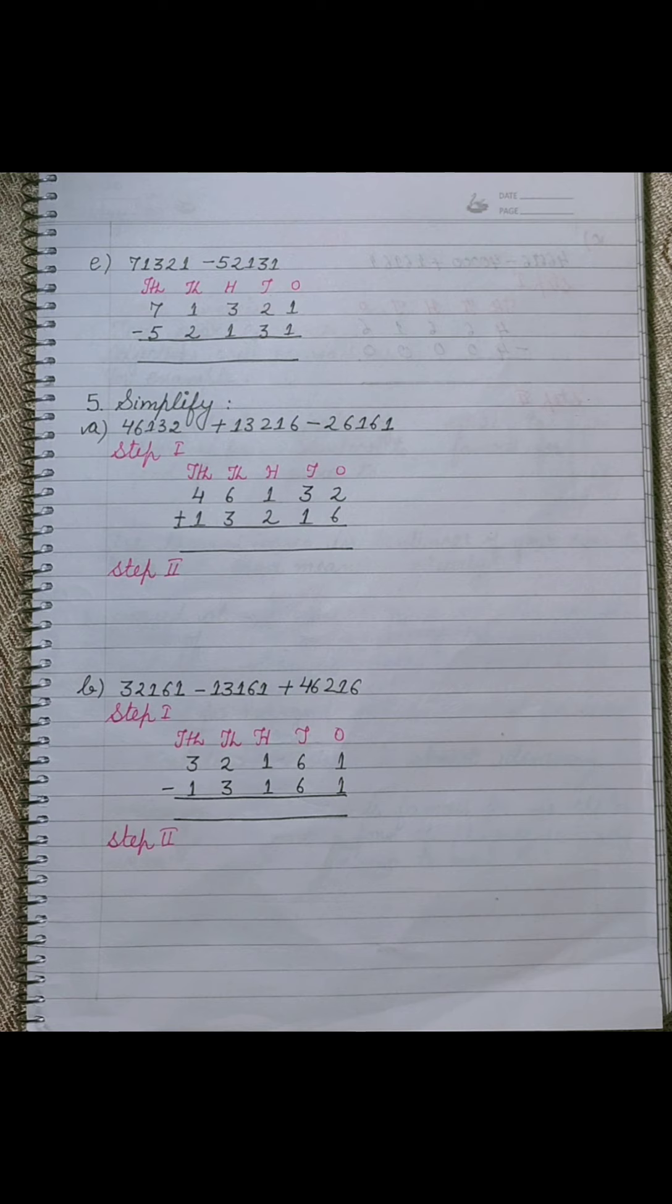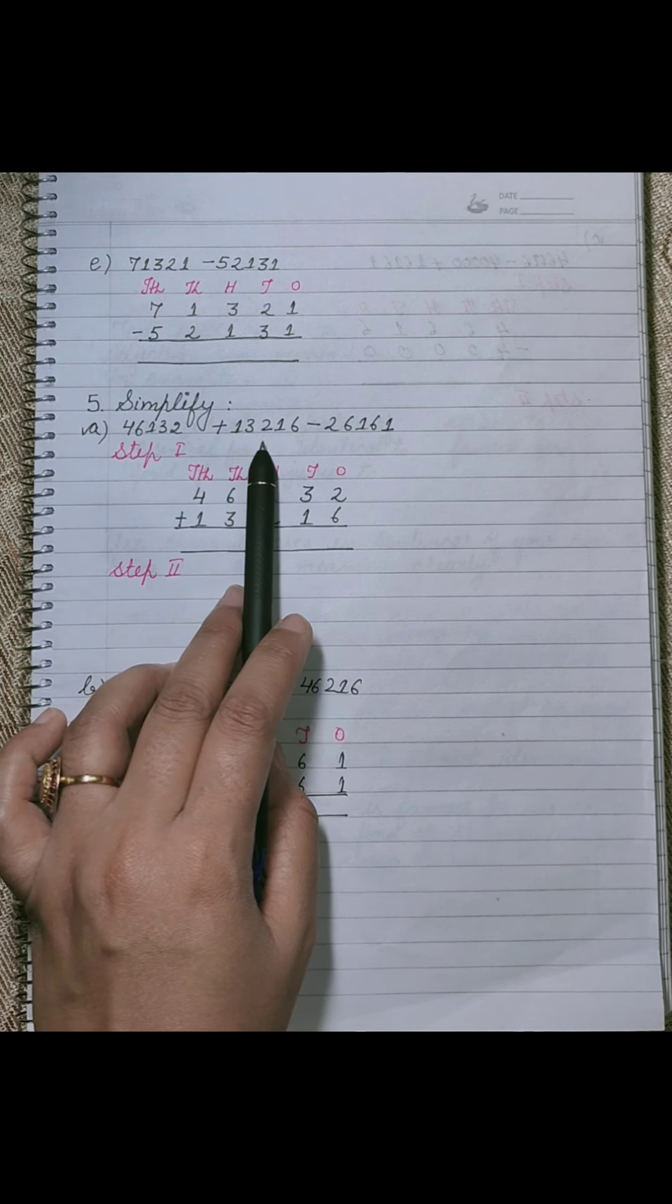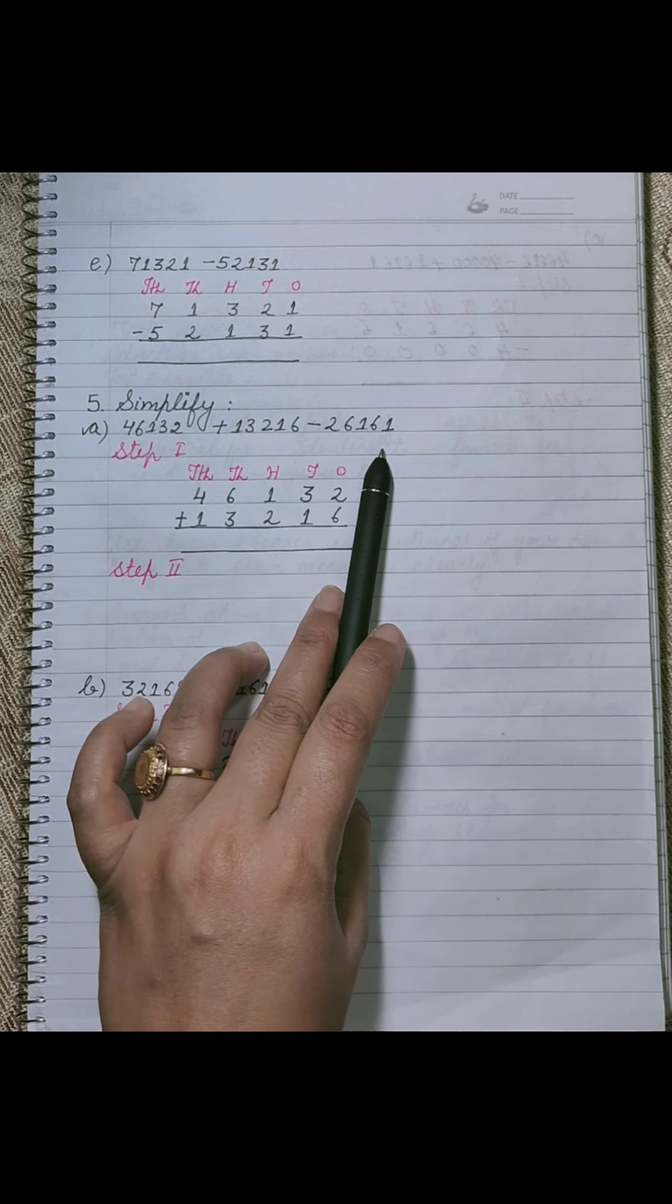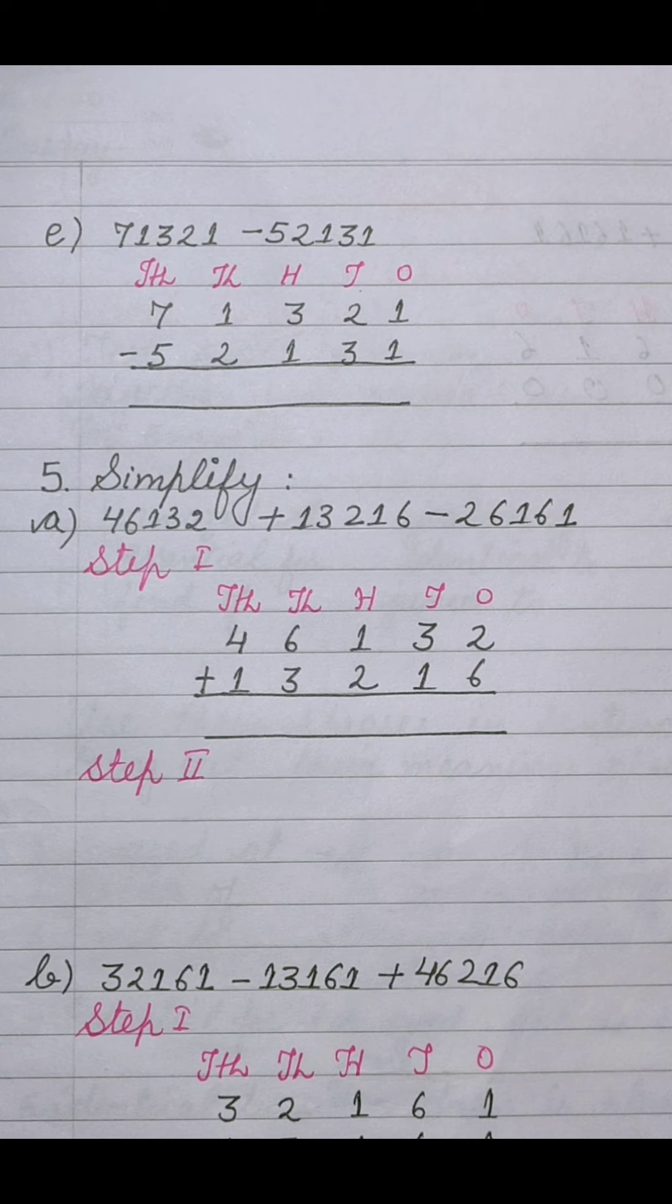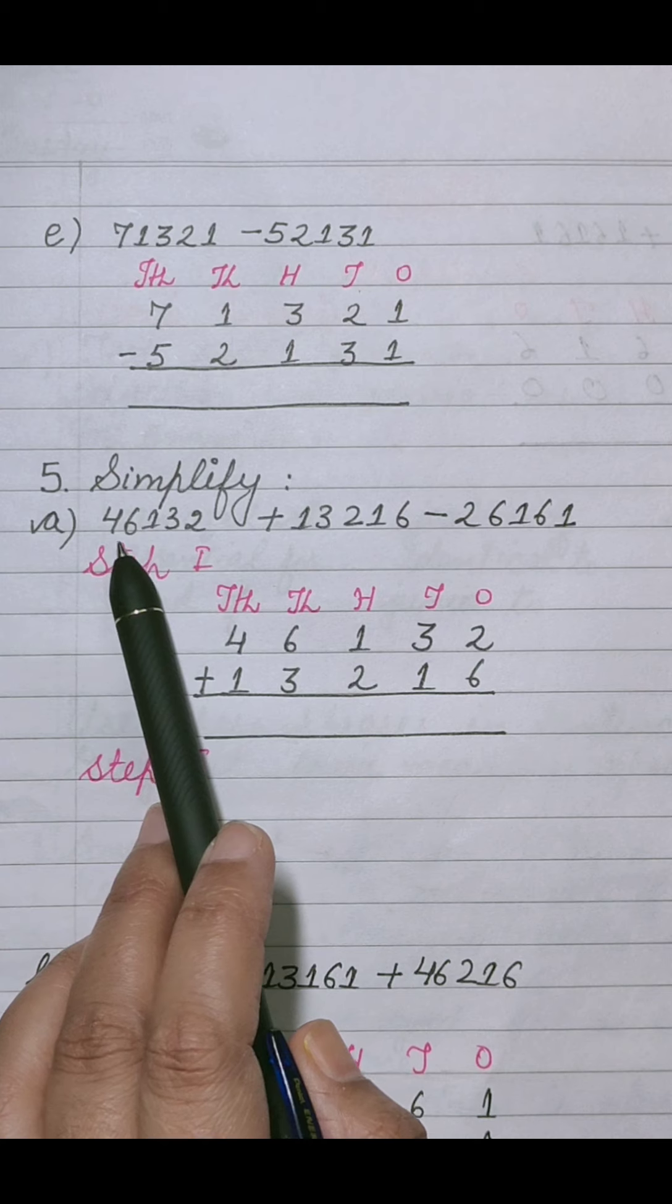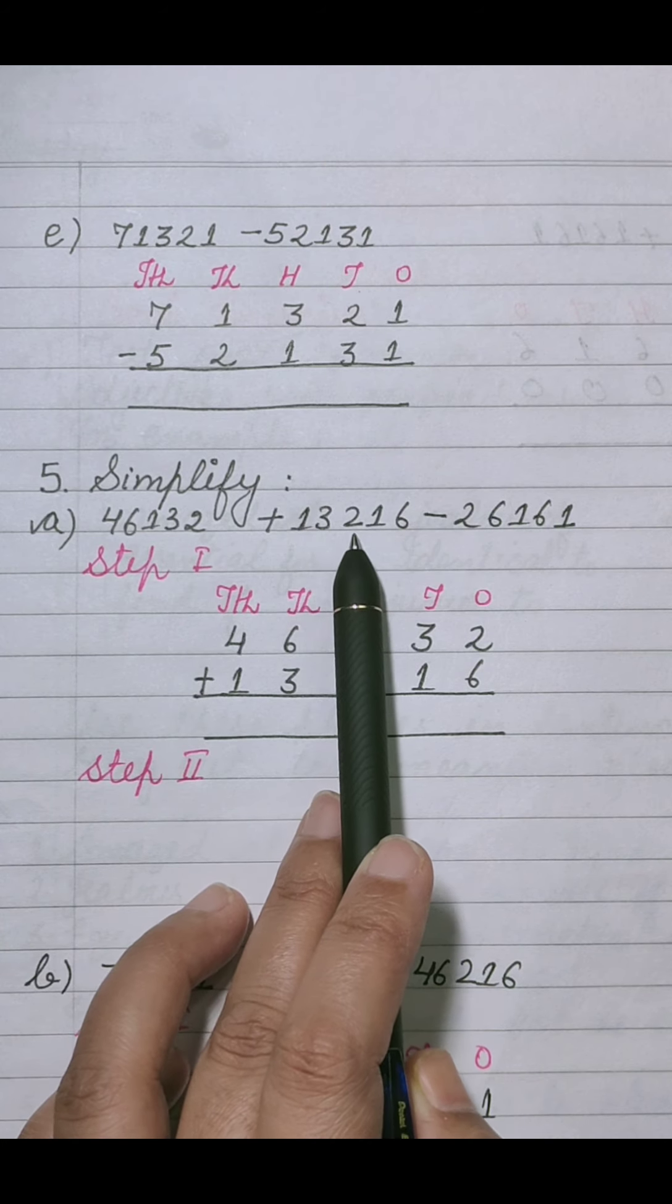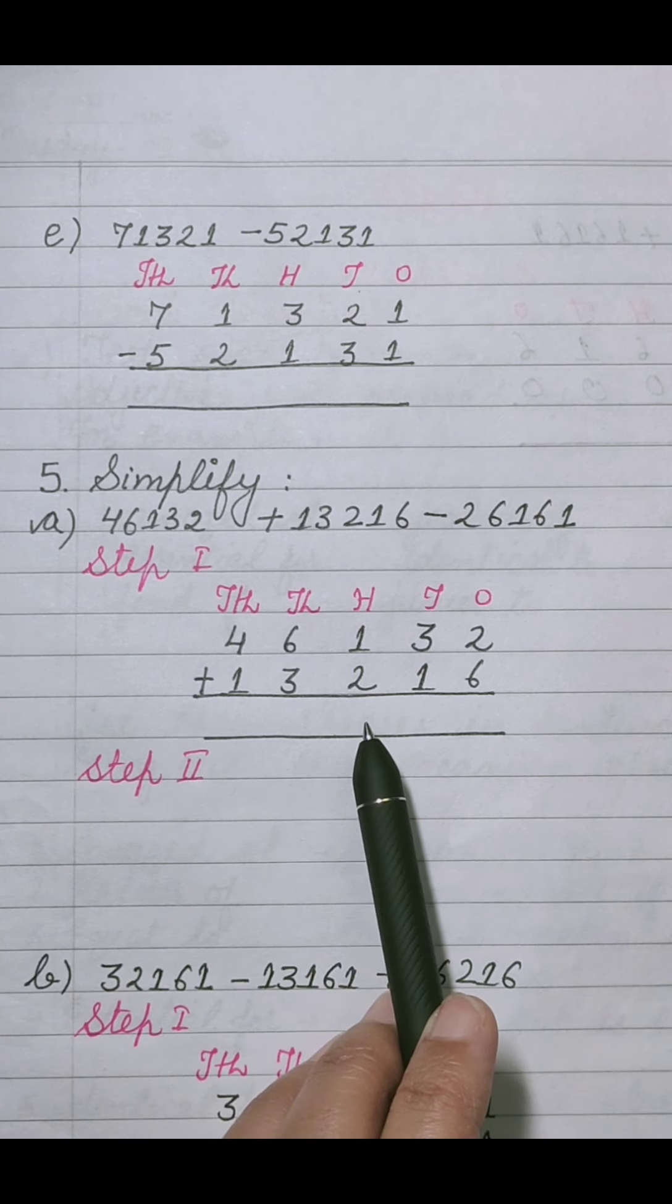Next is sum number 5, simplification. First part is 46132 plus 13216 minus 26161. We will solve it by using steps. First step is to add two positive numbers, means two plus values we will add. First positive value is 46132 and second positive is 13216. We will place these values according to its places.